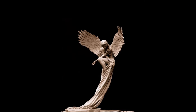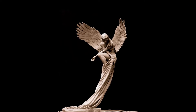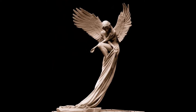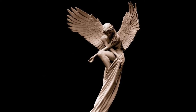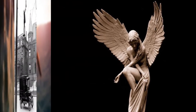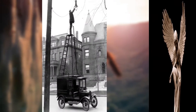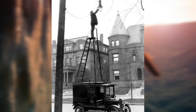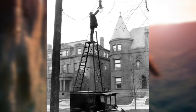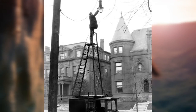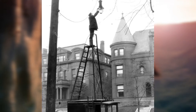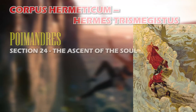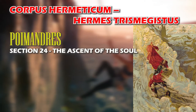Of all the symbols, wings — denoting direct ascent — and ladders or stairs, denoting staged ascent, are the two most important.